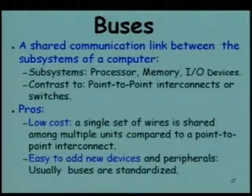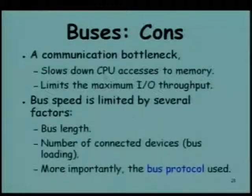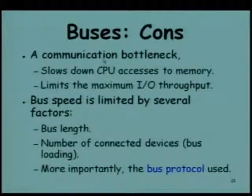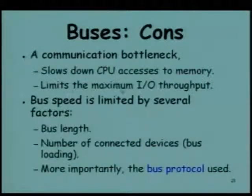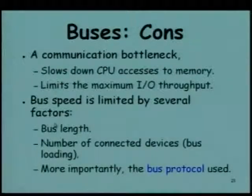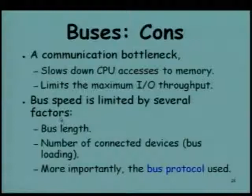The disadvantages with buses: as we've discussed, buses are turning out to be a bottleneck. When memory and processor performance increases, the bus slows down CPU access to memory and limits the maximum rate of I/O throughput. There are several other problems: the bus length is restricted. Different types of buses have different length restrictions — why is the length restricted for buses?